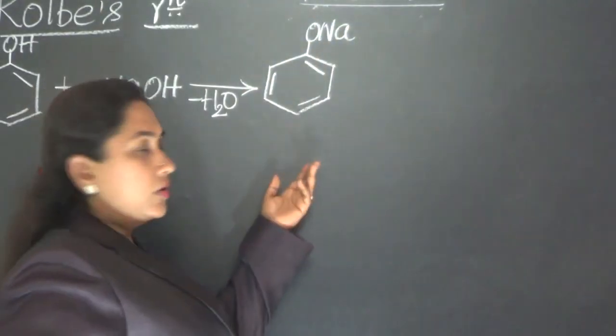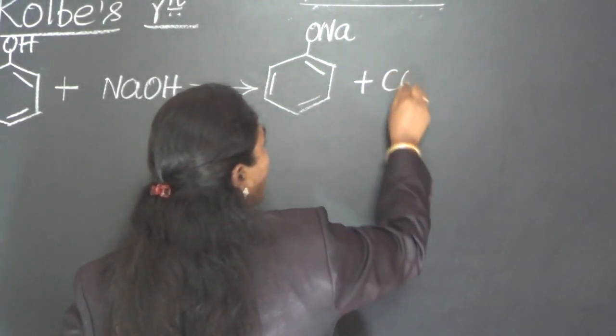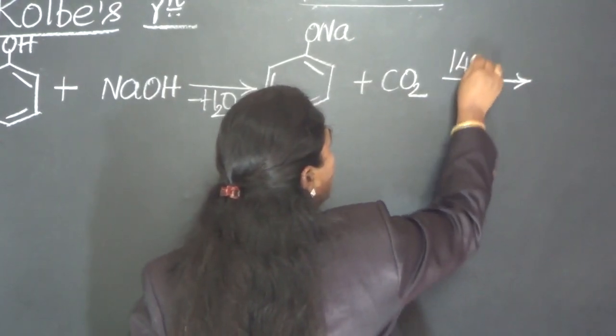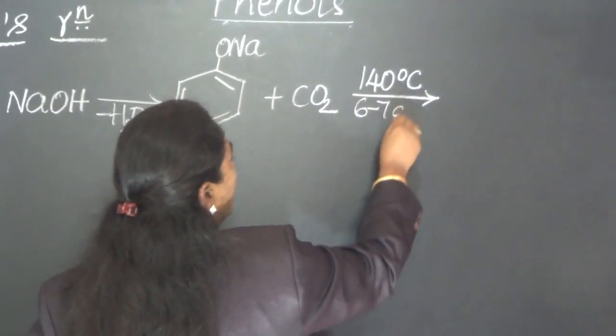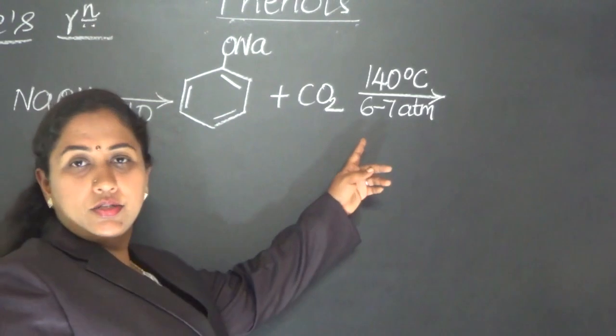Through this sodium phenate salt, carbon dioxide is bubbled through at about 140 degree Celsius temperature, applying 6 to 7 atmospheric pressure. This is the condition to be maintained.